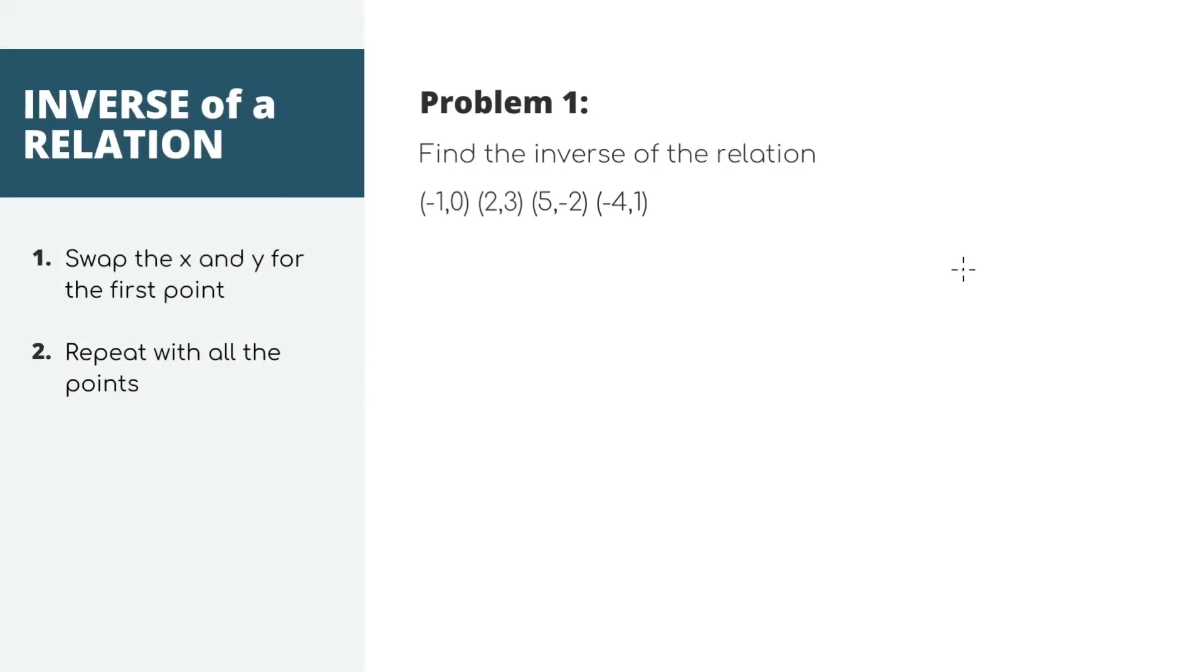Our first problem asks us to find the inverse of the relation. It doesn't look like your typical problem, but let's think through it. This is a relation. It's just a set of points and if we were to graph it, it's just like negative 1, 0 and this is a point where negative 1 is the x value and 0 is the y value. It's just a point.